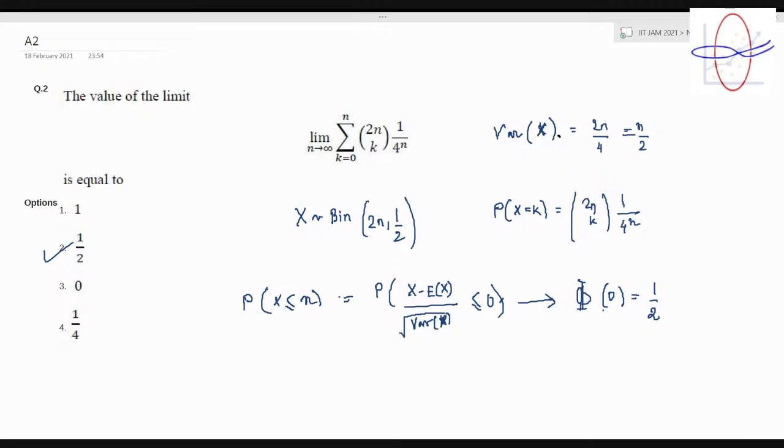You can do this problem in two different ways. The real beauty lies in a probabilistic approach. You can just directly compute it using the properties of combinations like 2n choose k equals 2n choose 2n minus k, and you can find the limit.